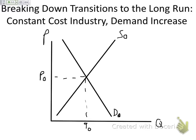Now the question says that demand increases, so I'm going to shift demand out to the right. I'm going to call that curve D1, because it happens after D0. We started in a long run equilibrium at P0 and Q0, so that means that at that point firms are making zero economic profit. Now we move to a short run equilibrium point right here at Q1 and P1, which correspond to the curve D1.